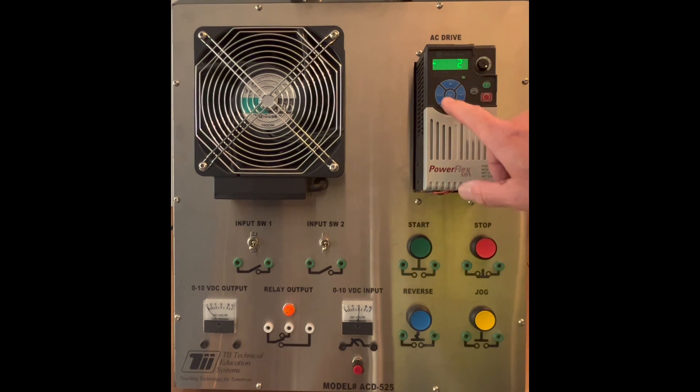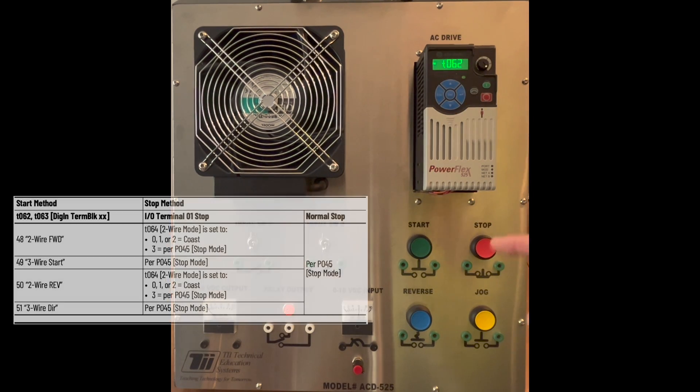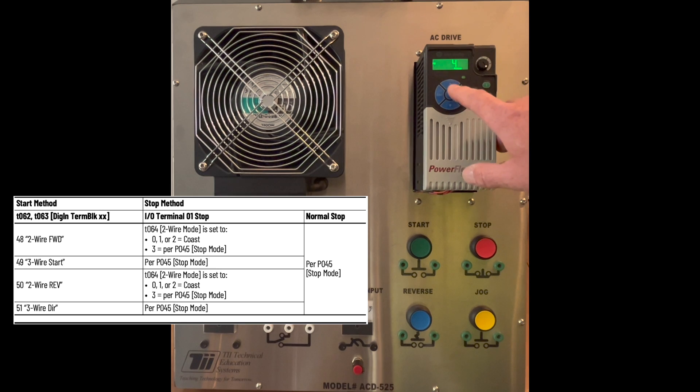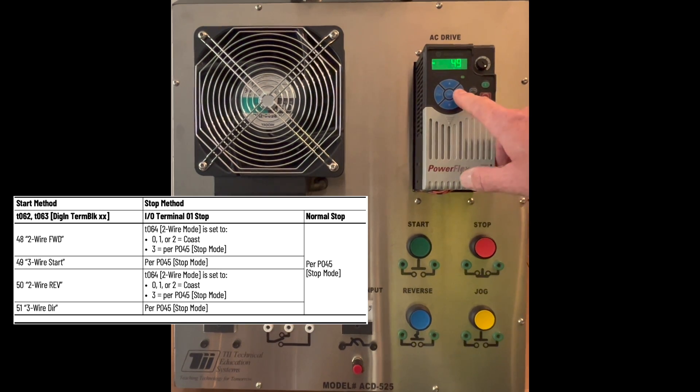Then we're going to hit the escape button, and then we are going to hit it one more time and go to T. And we want to enter into T62. Enter. And we're going to change this to 49. We're going to hit enter again.